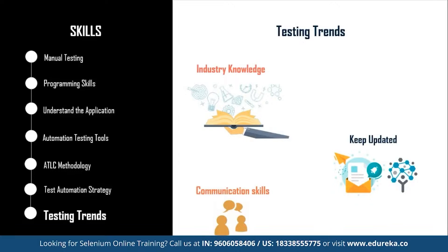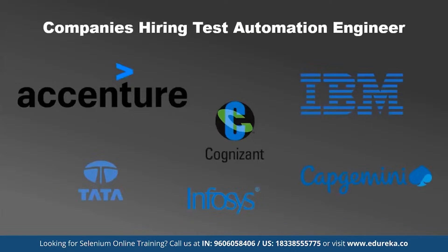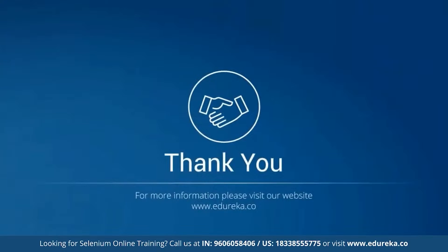Once you have mastered these skills, you are on your way to become a successful software test automation engineer. Some of the top companies hiring for test automation engineers are Accenture, IBM, Cognizant, Infosys, TCS and Capgemini. Do keep an eye for opportunities and utilize your skills to grab the offer. That was all about today's session — I hope this helps you prepare and get well versed with all the skills to become a successful test automation engineer. Thank you and happy learning!